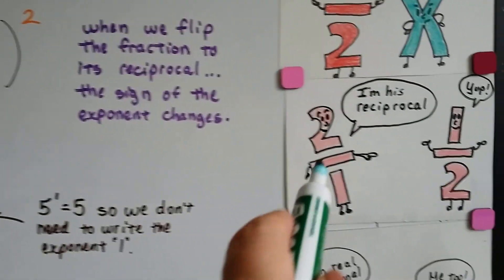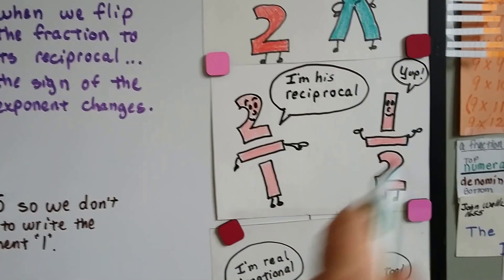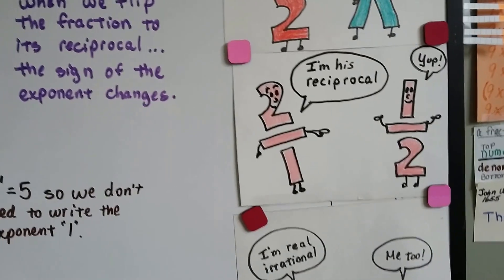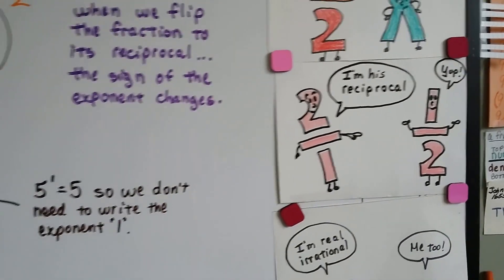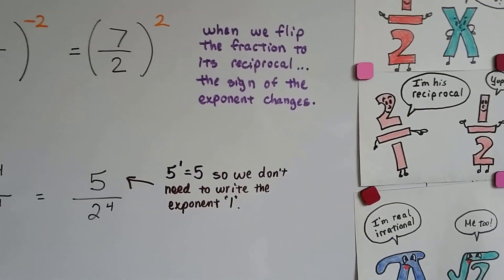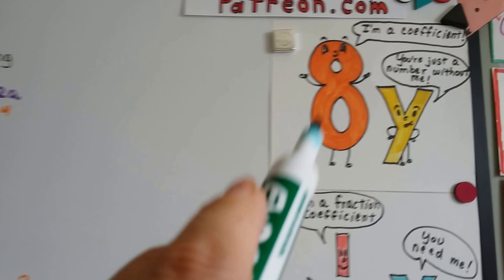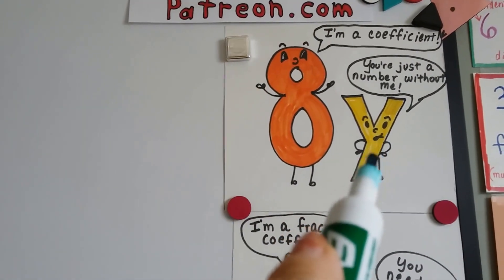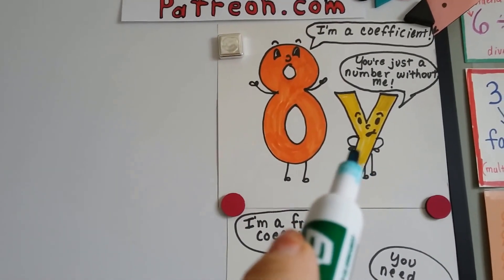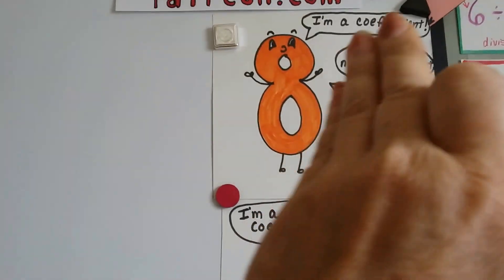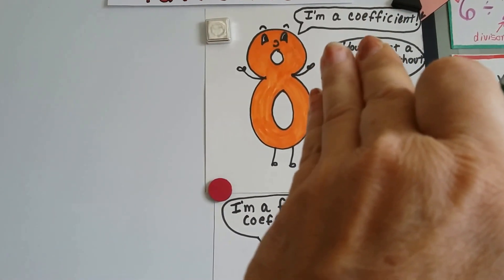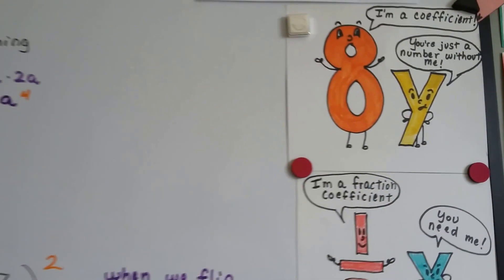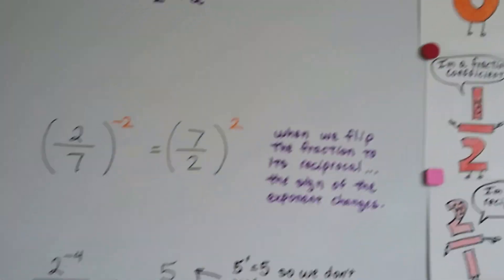So remember, the reciprocal is the flipped-around version of the fraction — the numerator becomes the denominator and the denominator becomes the numerator. And remember that the coefficient is the number in front of the variable. As soon as that variable leaves, he's just a standalone number. He's only a coefficient when he's in front of a variable.